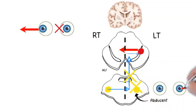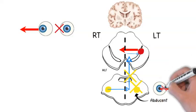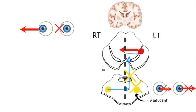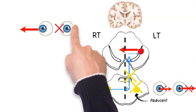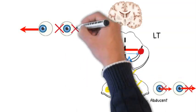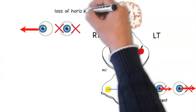Here, in addition to the previously mentioned internuclear ophthalmoplegia, the conjugate horizontal movements of the eyes to the left side will be lost as well.